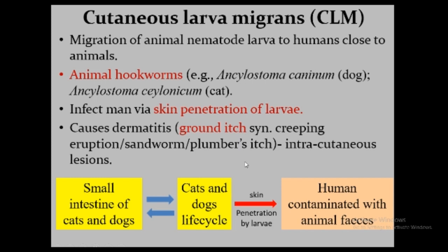In the animal, hookworms like Ancylostoma caninum remain in the small intestine of cats and dogs, passing eggs containing larvae into the exterior environment. The larva develops in the soil, becomes infective, and penetrates the animal to continue its life cycle. But if this larva accidentally penetrates human skin, larva migrans arises. Humans get contaminated with animal feces containing eggs with larvae, and eventually the larva penetrates the human skin to produce cutaneous larva migrans.